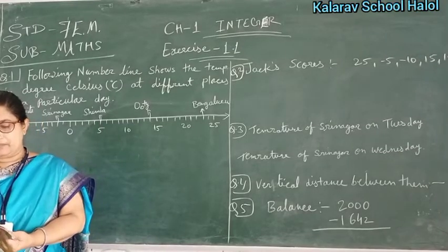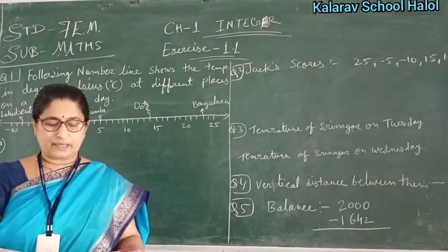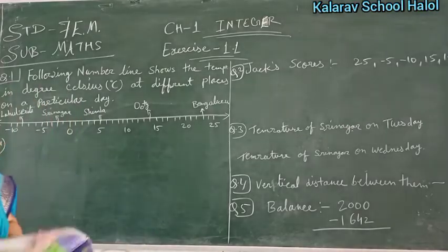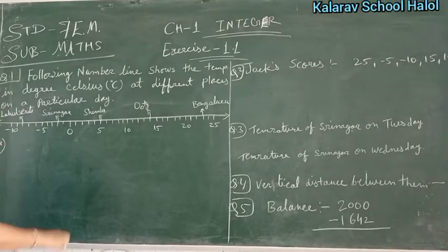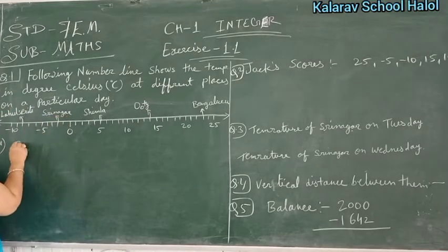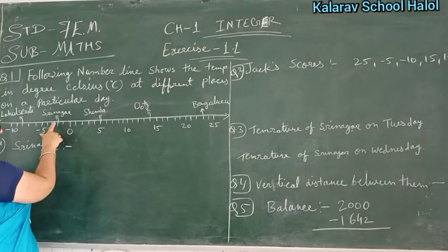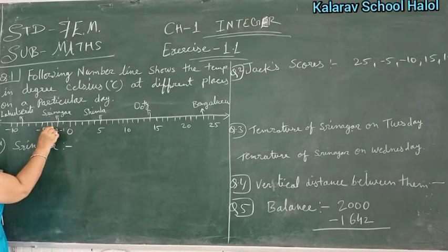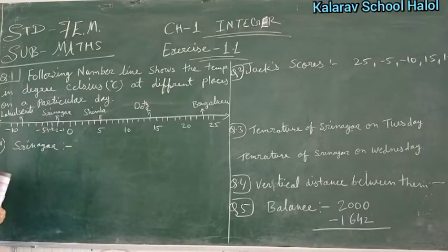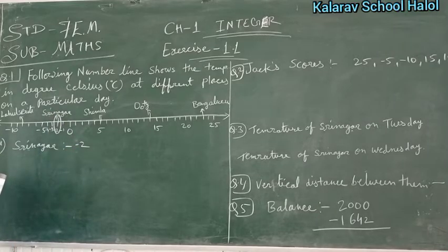Question A: Observe this number line and write the temperature of the places marked. Now we will see the temperatures marked. First, look at Srinagar — we have to see which point is highlighted. Starting from 0 and counting: minus 1, minus 2, minus 3, minus 4, minus 5. So Srinagar's temperature is minus 2 degree Celsius.